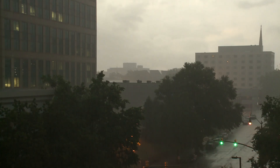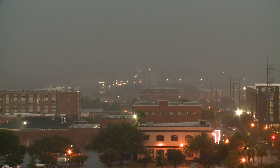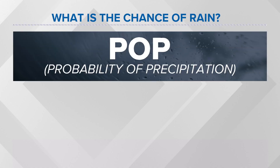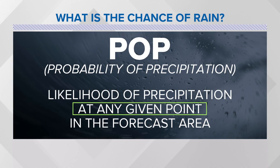A viral TikTok has many people wondering what it means when a meteorologist says there is a chance of rain. Let's talk about POPs, or the probability of precipitation. This is the likelihood of precipitation at any given point in the forecast area.